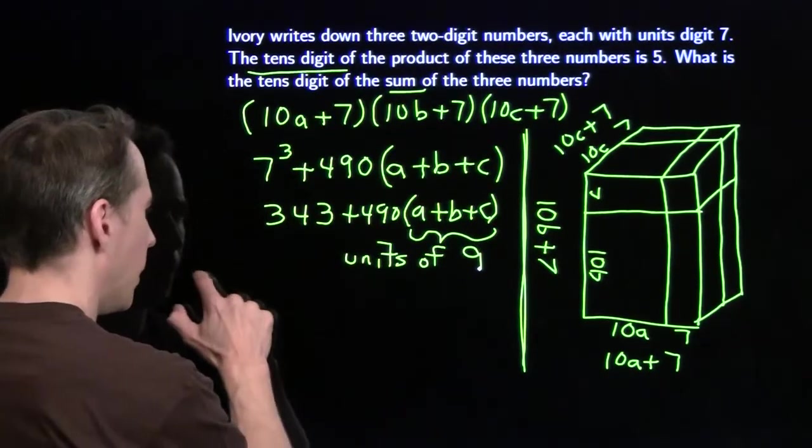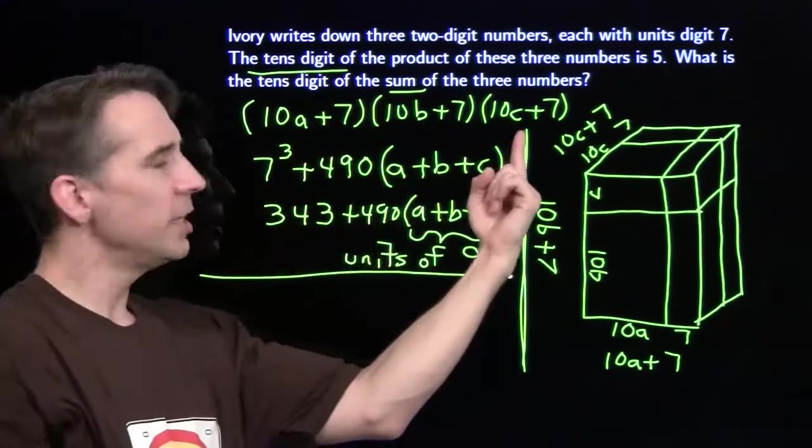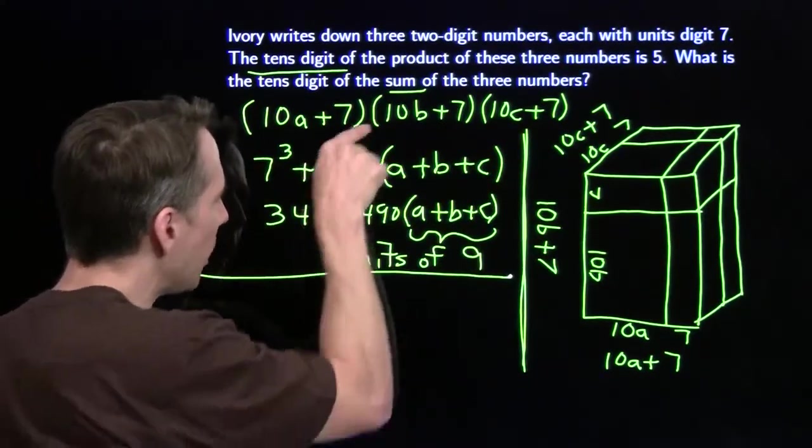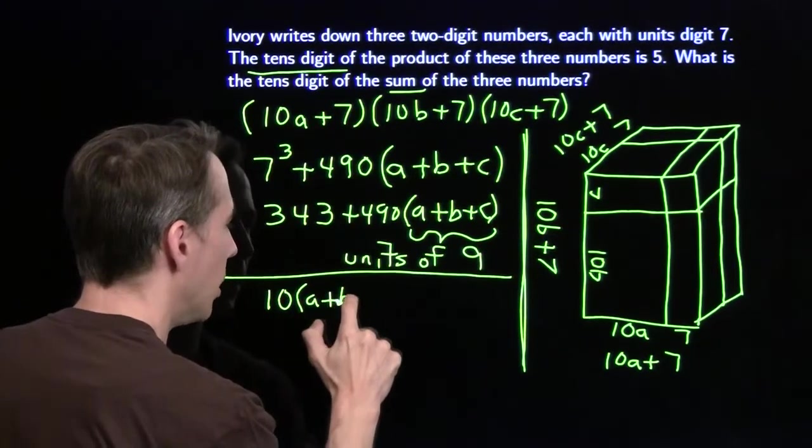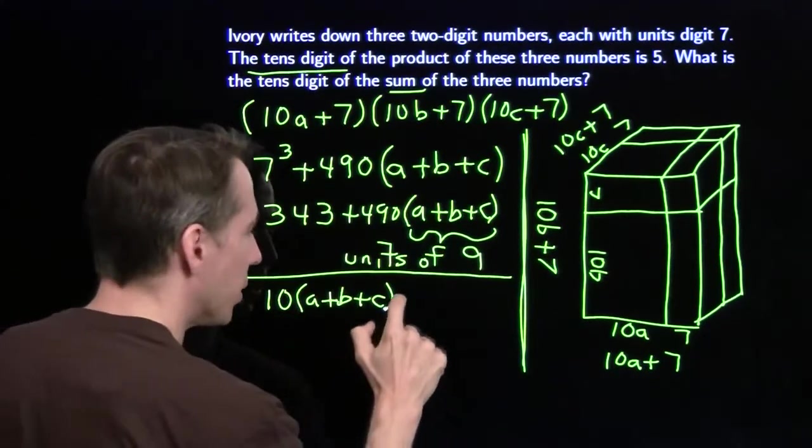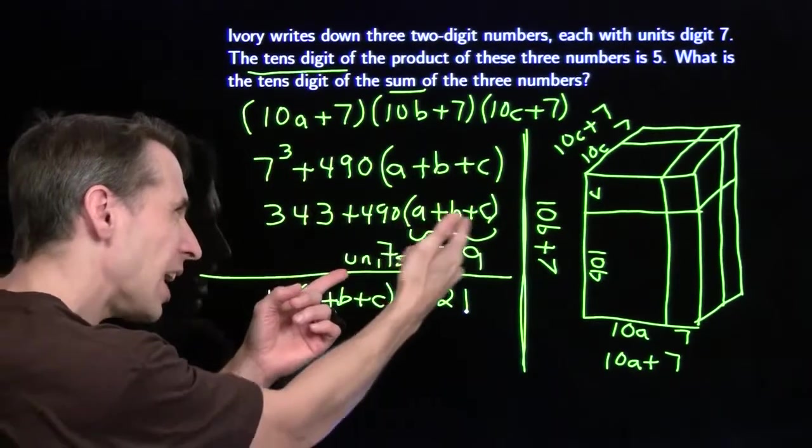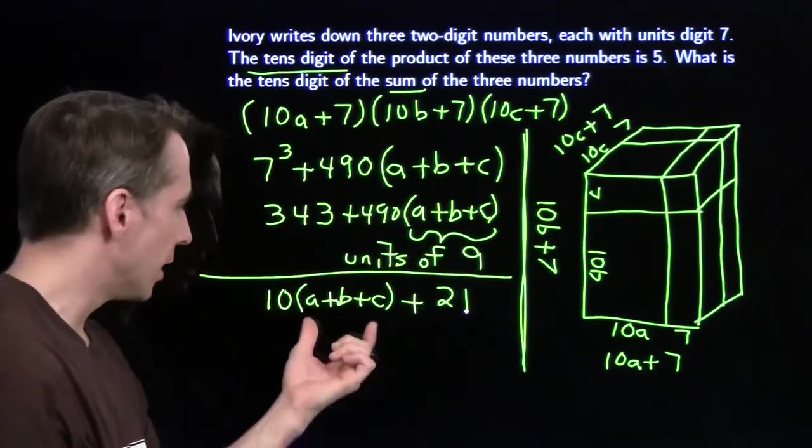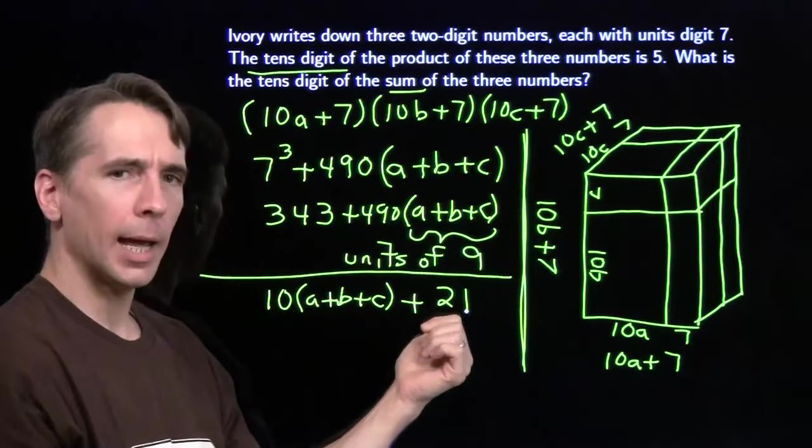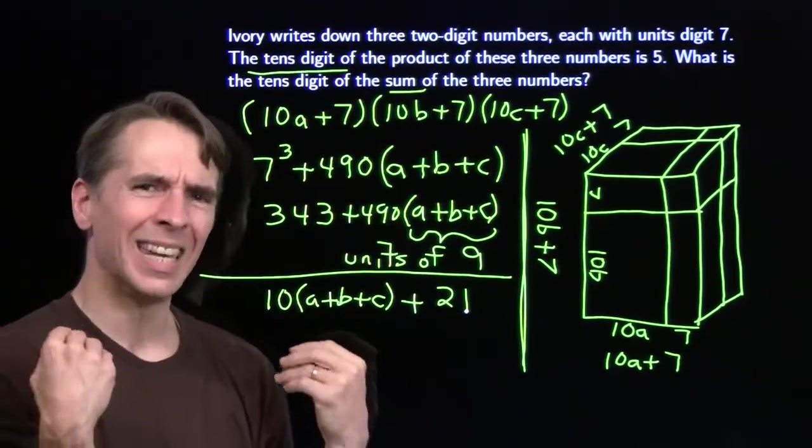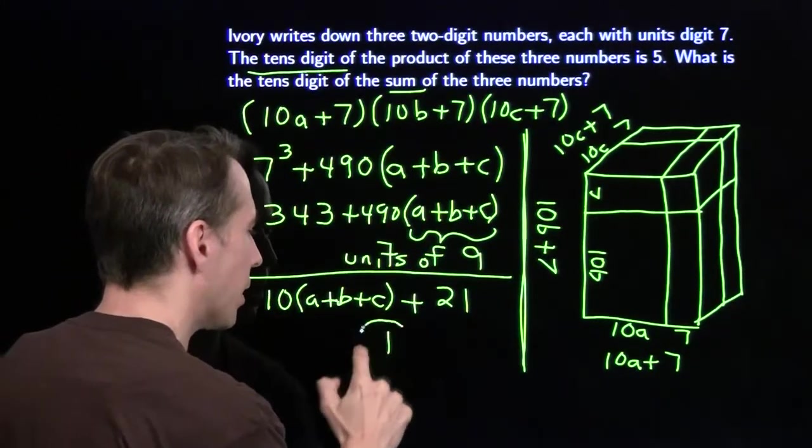How does that help? All right, here we go. Back up here, we care about the sum of the three numbers. We're going to add these three numbers together. I'm going to add a 10a plus a 10b plus a 10c. That's going to give me 10 times (a plus b plus c). And now I'm excited because I see that a plus b plus c again. And I add the 7 plus 7 plus 7 is 21. Now, this a plus b plus c, its units digit is 9. So when I multiply that by 10, I'm going to end up with a tens digit of 9. Then I'm going to add 21 to whatever this is over here. So I'm going to take that tens digit of 9 and move it up by 2. It's going to go to 0, and then it's going to keep on going right back to 1.